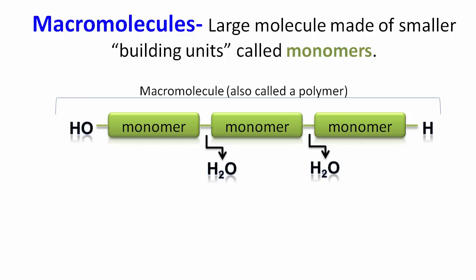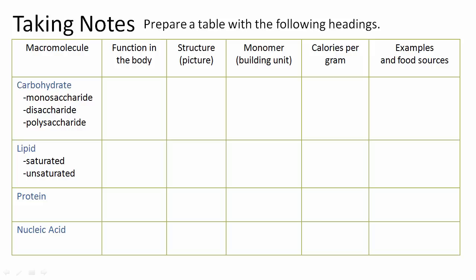And there are four major macromolecules for which we're interested in: carbohydrates, lipids, proteins, and nucleic acids. You might find it most useful to prepare a data table of the following headings. So pause the video, go ahead and sketch this table out. Make it big, a full page. All right, you ready to go?